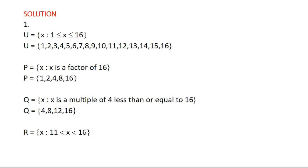R is also given in set builder notation: the set such that X is greater than 11 and at the same time X is less than 16. So we list members between 11 and 16. Remember that 11 and 16 are not included because X is strictly greater than 11 and strictly less than 16. So those members are 12, 13, 14 and 15. We also verify that 12, 13, 14 and 15 are all in U since R is a subset of the universal set. So we have now listed all members of U, P, Q and R.